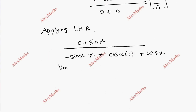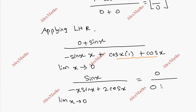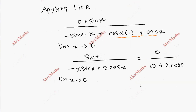Applying the limit x→0: the numerator sin(0) = 0. The denominator: x·sin x → 0, and 2·cos 0 = 2·1 = 2. So the total denominator is 2. Therefore, the answer is 0/2 = 0. The final answer is 0.